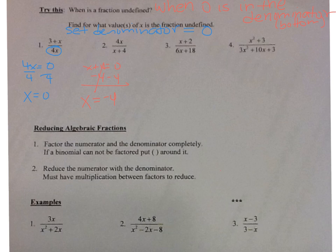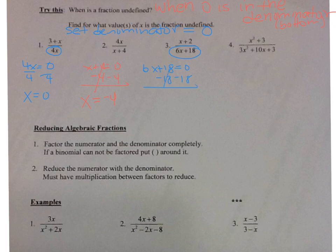Let's take a look at number three. For what value of x is the fraction undefined? If you're not sure just by looking at it, take the denominator, 6x plus 18, set it equal to zero. Subtract 18: 6x equals negative 18. Divide by 6: x is equal to negative 3.